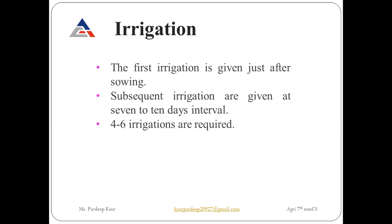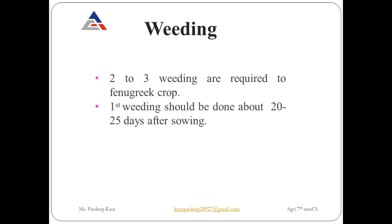After fertilizer application, the first irrigation is given immediately after sowing. Subsequent irrigations are given at 7 to 10 day intervals, with 4 to 6 irrigations required in the whole crop life cycle. For weeding, 2 to 3 weedings are required; the first should be done about 20 to 25 days after sowing, when weeds begin to germinate in the field.